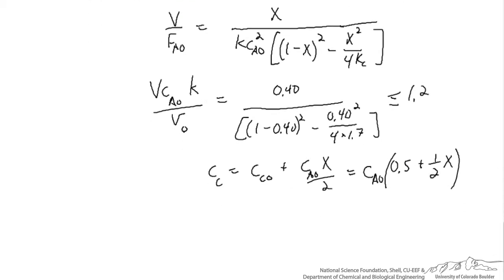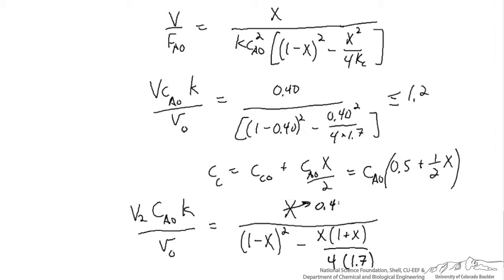When we do that, we'll get the following. I've gone ahead and plugged in the value of Kc as 1.7. The x we want to achieve is still 0.40. If we compare it to the expression shown above here, the development is very much the same. The only difference is in this final term. Instead of an x squared, we have an x times a 1 plus x.